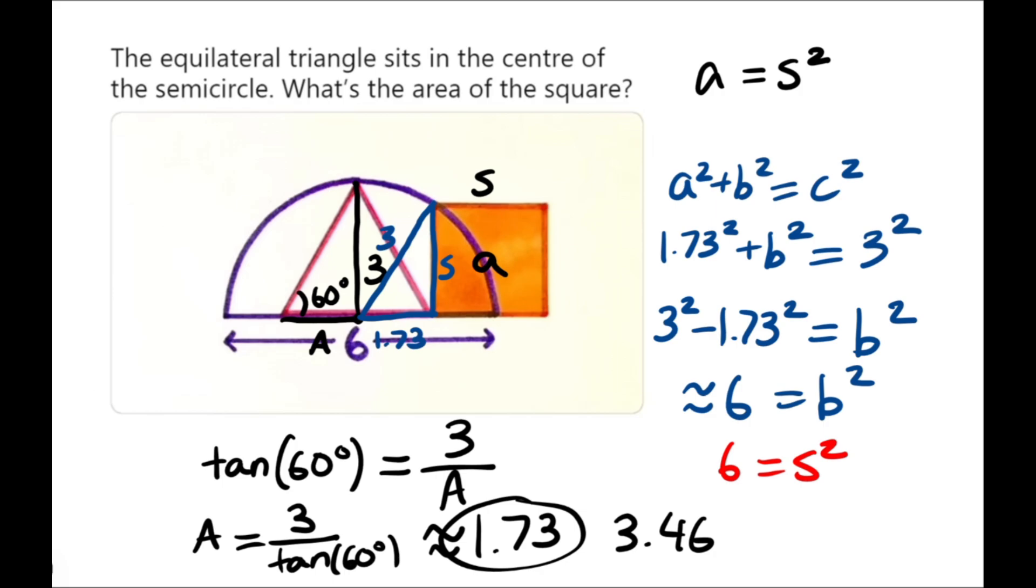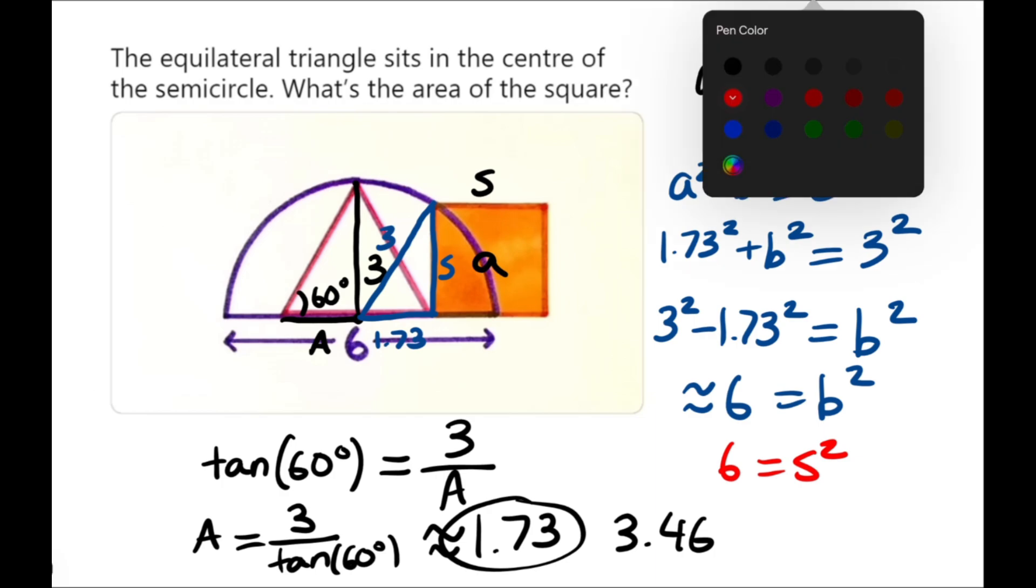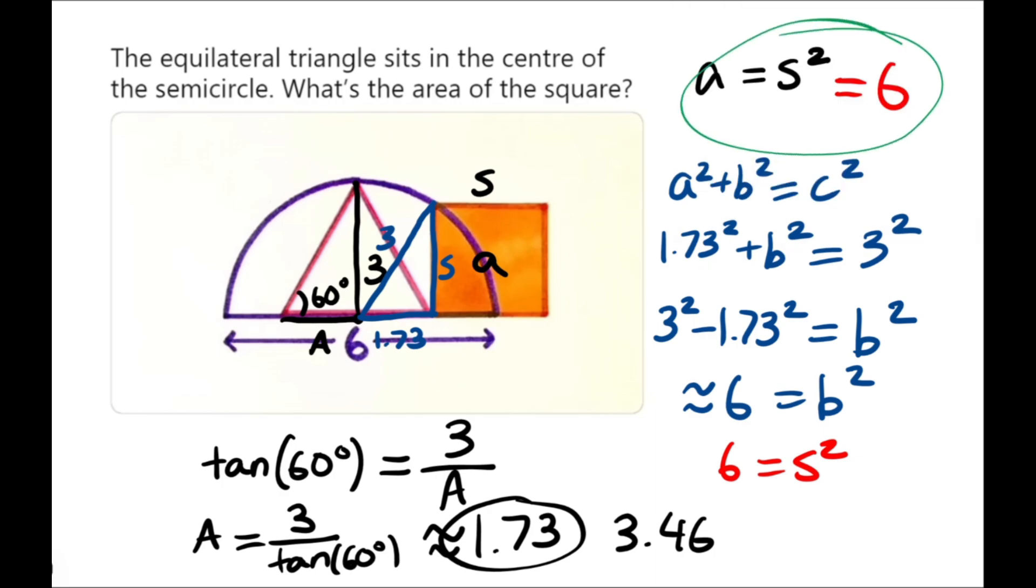So, we can just say 6 is equal to S squared. And, again, usually, we'd square root both sides to get that edge length. But we don't need to do that, because we were trying to find S squared, which is the area. So, now we know S squared is equal to 6. And that is the answer to our problem. The area is equal to 6.